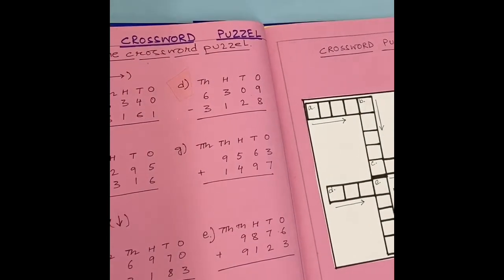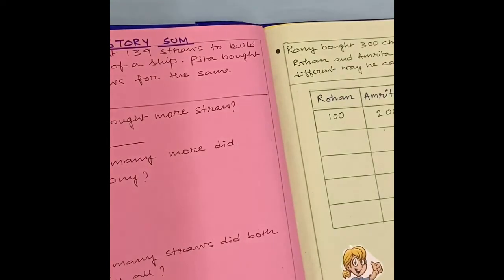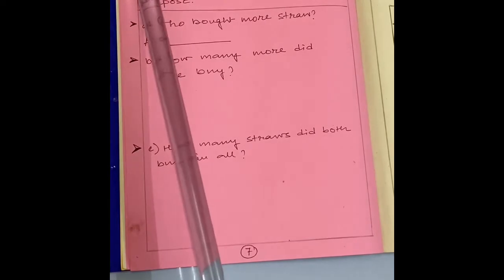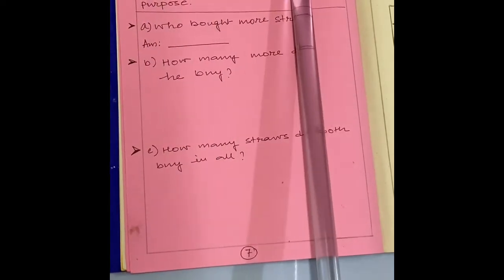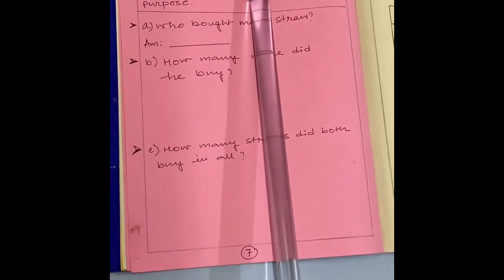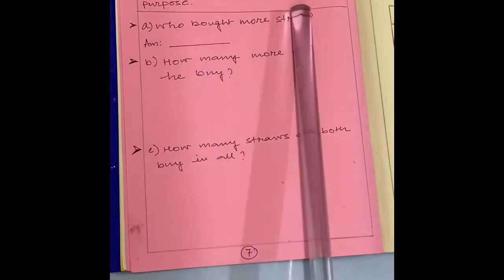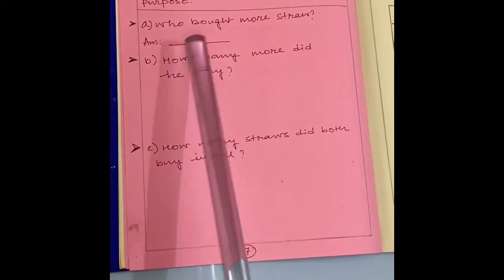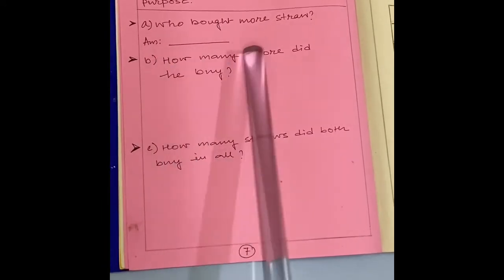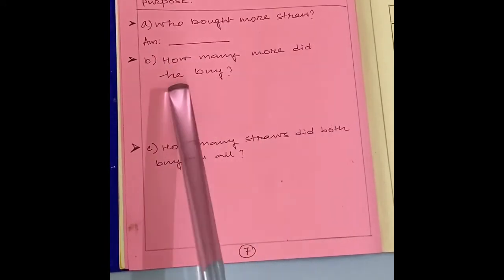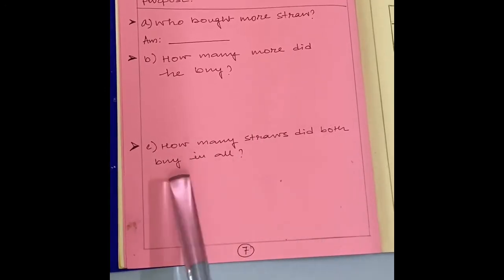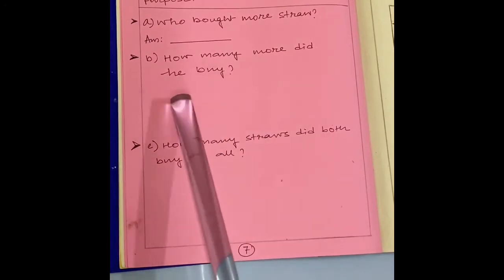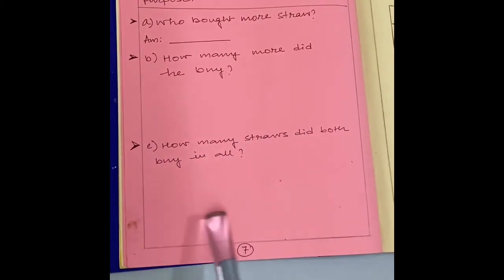Now, come to the next page. Page number 7. Story sum. Ravi bought 139 straws to build a model of a ship. Rita bought 123 straws for the same purpose. Now, here is some question. Number A. Who bought more straw? You have to write the answer. How many more did he buy? How many straws did both buy in all? You have to write the answers here. You have to solve the problem and then you have to write the answer here.